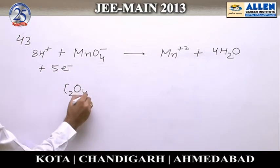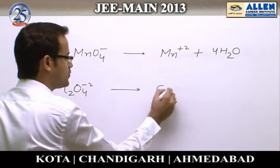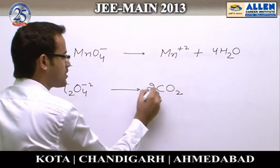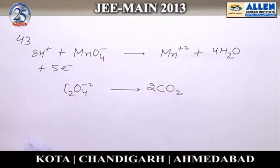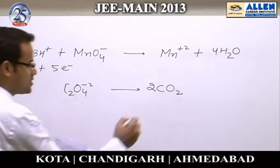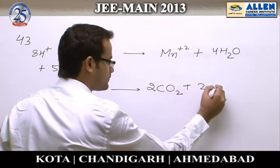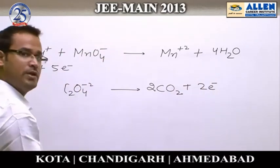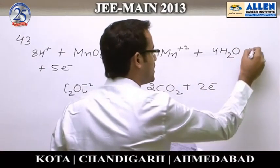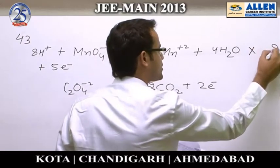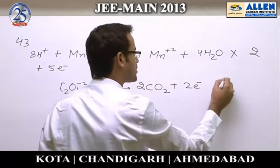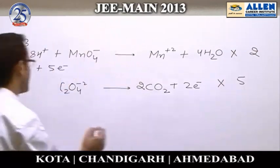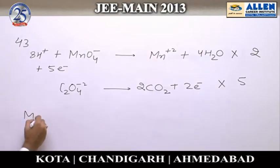Similarly, for the oxidation half-reaction: C2O4²⁻ converting into CO2. Balance carbon first, then balance the charge by adding electrons. To equate the electrons in both reactions, multiply the first reaction by 2 and the second reaction by 5.